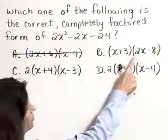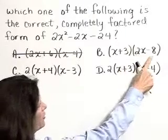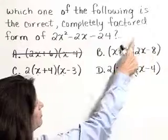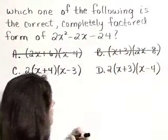And let's also eliminate B as a possible choice for the same reason. In this binomial 2x minus 8, there's a common factor of 2 that could be pulled out in the front. So that's not completely factored either.